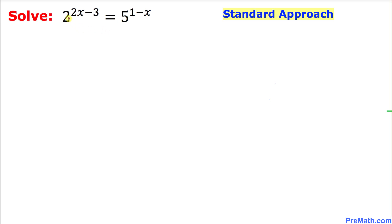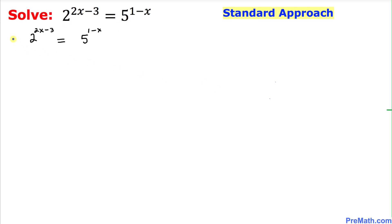So let's get started with the very first example. We are going to solve the exponential equation 2 power (2x minus 3) equal to 5 power (1 minus x). As you can see, we have two different bases: 2 is on the left hand side and 5 is on the other side. Since there is nothing in common between these two bases, we are going to take the log on both sides.